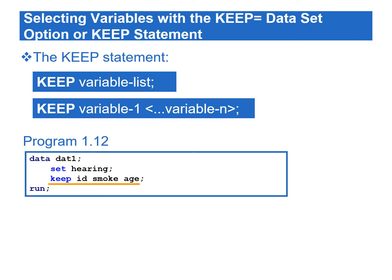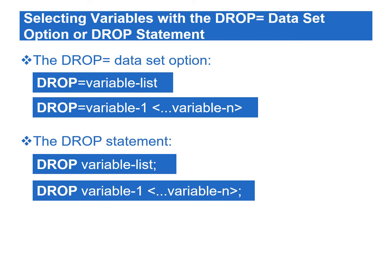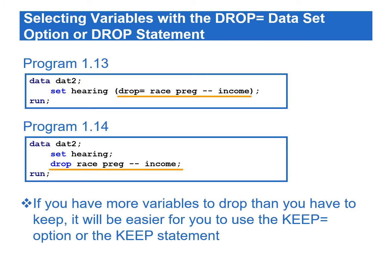Alternatively, we can select variables in the data step by using the KEEP statement. For example, Program 1.12 creates the same data set by using the KEEP statement. We can also use the DROP= data set option or DROP statement to select variables that we want to remove when creating a data set. Program 1.13 selects the same variables id, smoke, and age from the hearing data set by using the DROP= option.